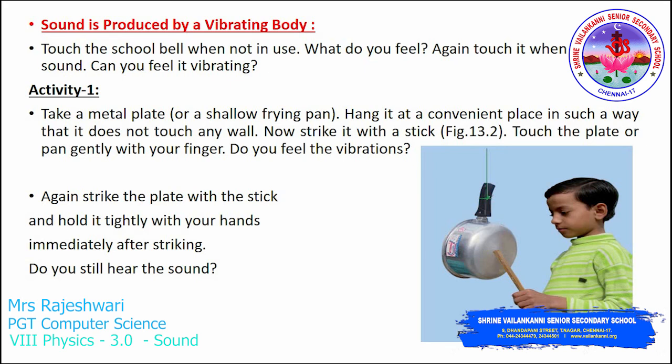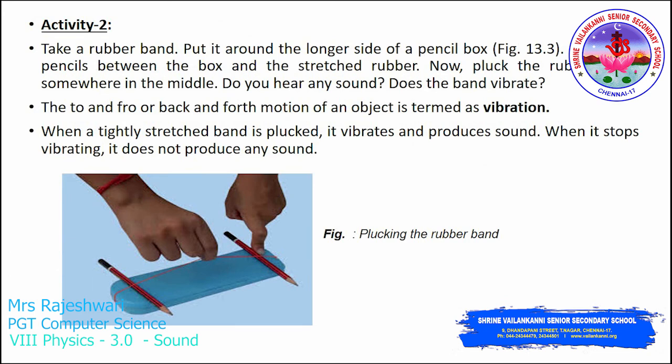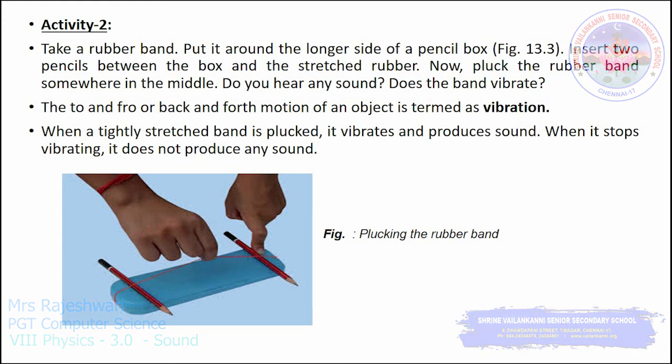Another activity you can try: take a pencil box and stretch a rubber band over it, fixing two pencils at both ends as shown in the picture. Pluck the rubber band — it starts to vibrate and produces sound. When it stops vibrating, it produces no sound. These are simple activities you can do at home. I hope you understood this class; let us meet in the next class. Thank you, children.